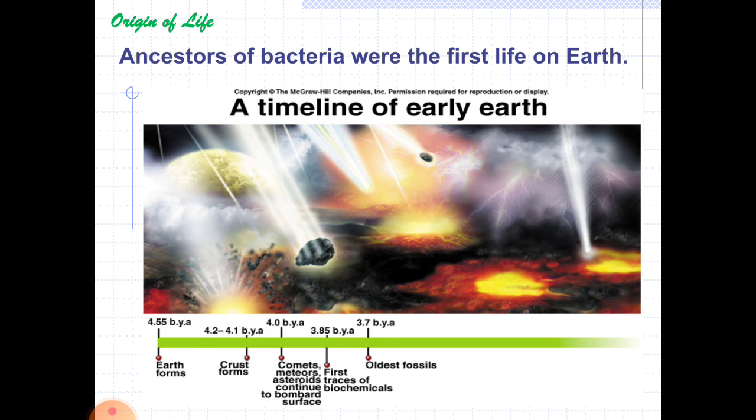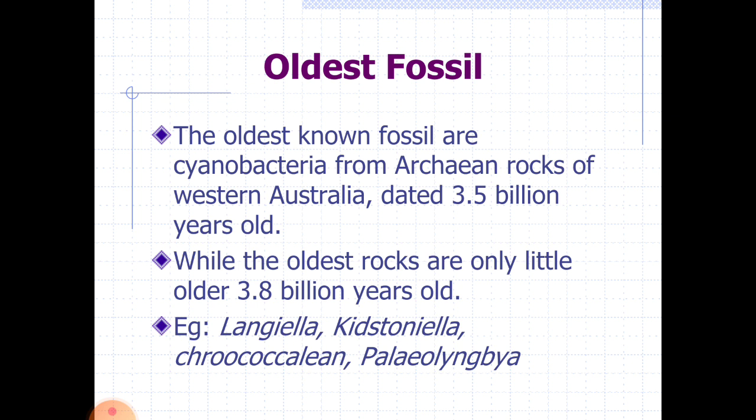The first evidence of the oldest fossil is believed to belong to around 3.7 billion years ago. The oldest known fossils are of cyanobacteria from Archean rocks of Western Australia, dated 3.5 billion years old, while the oldest rocks are only slightly older at 3.8 billion years ago. So the time period required to form the first life form on earth is assumed to be very short. These cyanobacteria were identified as Eoentophysalis, Kinstonella, Crocochilins, and Paleolingbae.